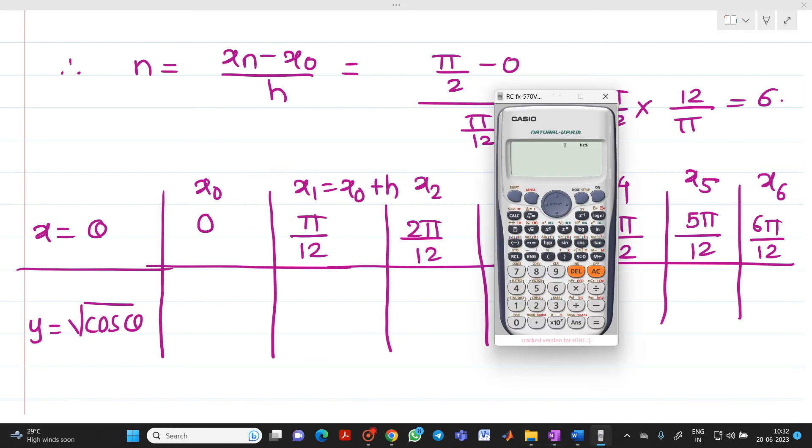So let me open now my calculator. Keep your calculator in radian mode. So what it will be? √(cos A). Let me first press CALC. Put A equal to 0. You will get answer as 1.